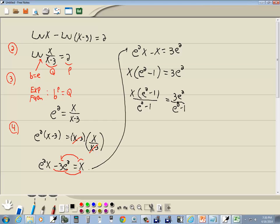And when we do that, the e squared minus 1's cancel, and we've got x equals 3 e squared over e squared minus 1.